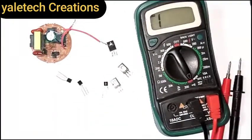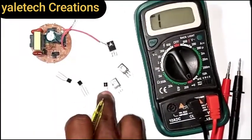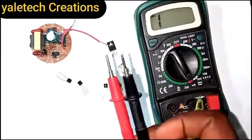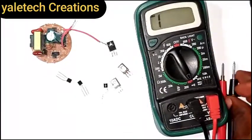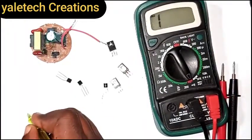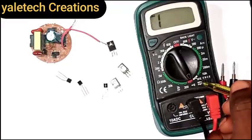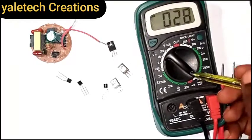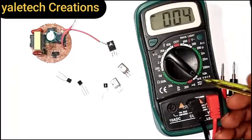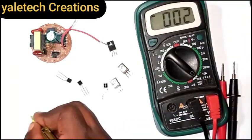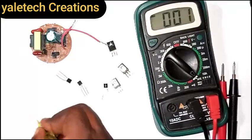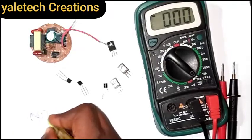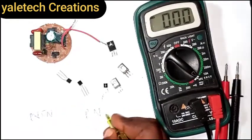I have some transistors here. What I want to do is show you how to test them with your probe. But first, let me make something clear. On your multimeter, you can see the NPN slot and the PNP slot. You will switch the dial to your HFE setting to use those sockets.